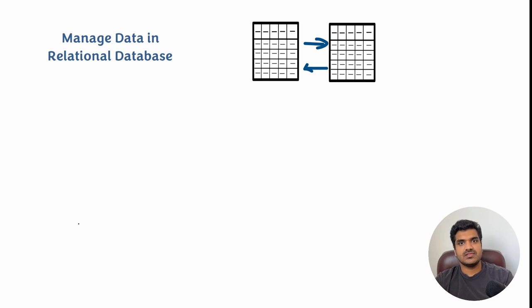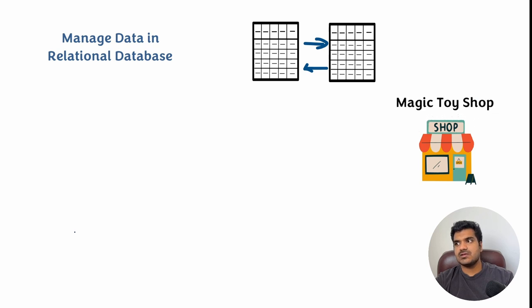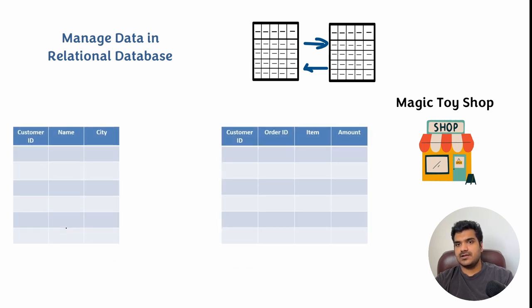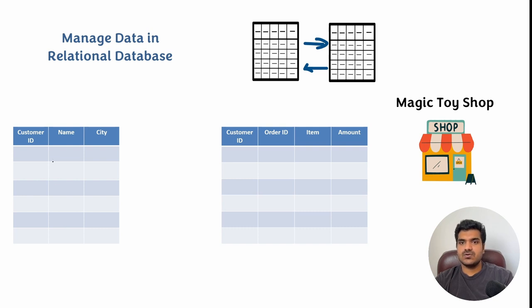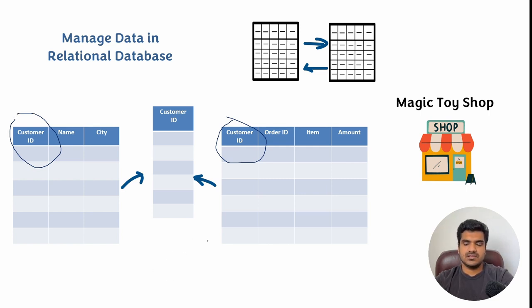To understand this concept in a better way, let's take one example. Here we have a toy shop and the name of the toy shop is Magic Toy Shop. They use a relational database to store their data. They have two tables in their relational database. One table contains columns like customer ID, name, city, and another table contains columns like customer ID, order ID, item, and amount. These two tables are connected with each other with the column customer ID. The customer ID column is common in both tables. This is the basic concept behind a relational database - two tables will be connected with each other with a common column.